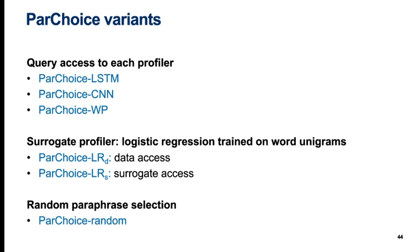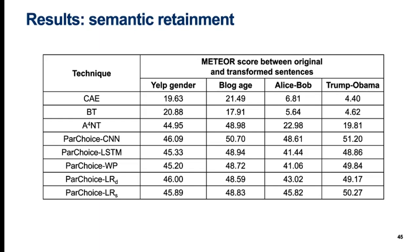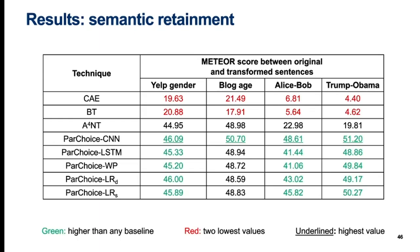Finally, we also experimented on fully random paraphrase selection that had no access to anything. On this slide we show METEOR scores between original and transformed sentences by each style transfer technique on all four datasets. METEOR measures n-gram overlap with additional synonym and paraphrase information. The CAE and BT baselines always result in the worst scores shown here in red. In the smaller datasets Alice-Bob and Trump-Obama, CAE and BT don't even exceed 10 in METEOR scores, which practically means absolutely no semantic retainment.